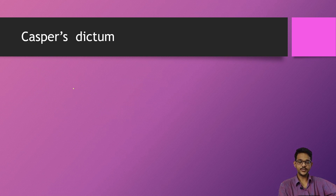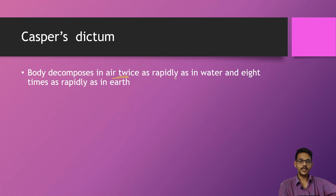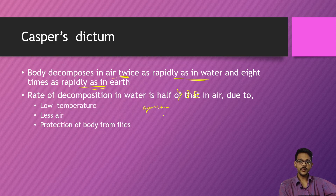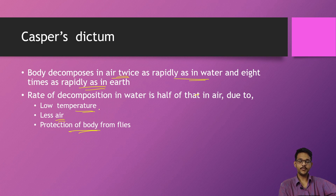Coming to Casper's dictum — this rule states the relative rate of decomposition: a body decomposes twice as rapidly in air as in water, and eight times as rapidly as in earth. So in air it decomposes fastest, then water, then earth. In water, the rate of decomposition is half that of air due to lower temperature, less air, and protection of the body from flies — there is no air movement, lower temperature, and flies cannot lay eggs, so the body is better preserved in water compared to air.